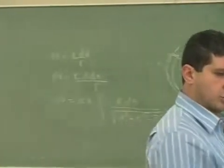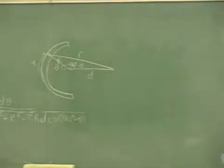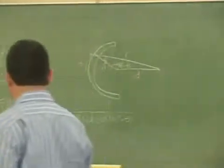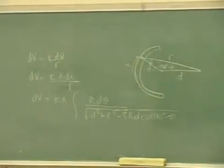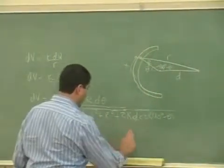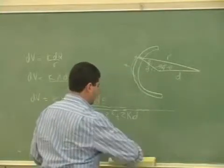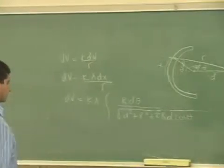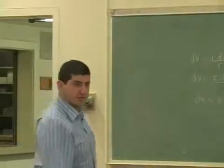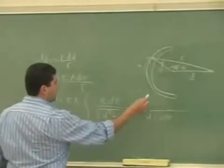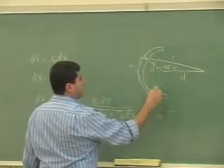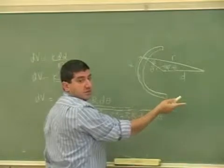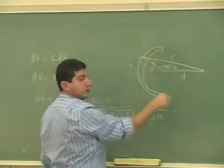Is that sine of theta? Cosine of the supplementary of an angle is equal to negative cosine theta. So we can just change this to positive cosine theta. So we would have to integrate this from negative pi over 2 to pi over 2, but we could double it — just go from 0 to pi over 2 and double it.